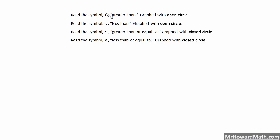Greater than is this symbol right here. There are a lot of ways to remember it. So let's say we had the statement x is greater than y — this symbol means that x is bigger than y, reading from left to right. You can remember this because the greater than side has two points on it — a point on each end — while the less than side only has one point, so it is less than the side with two points.